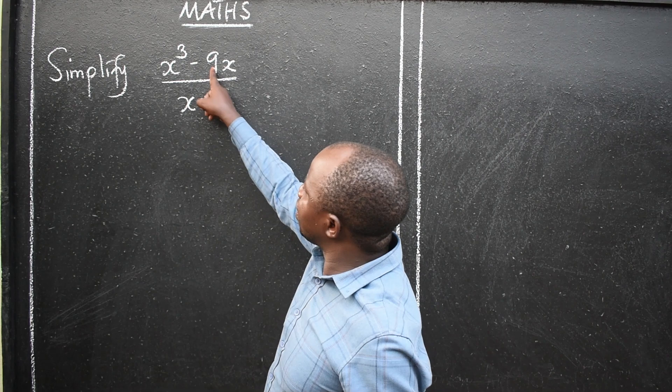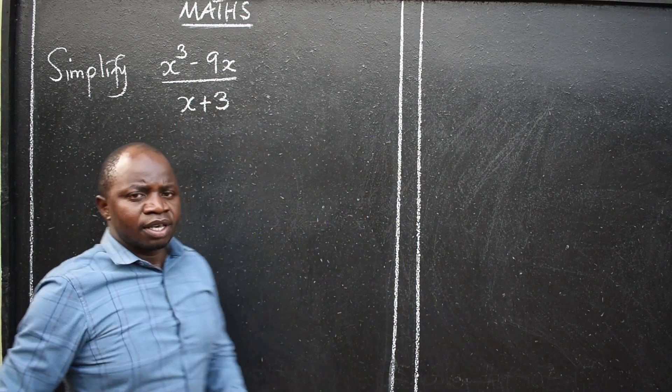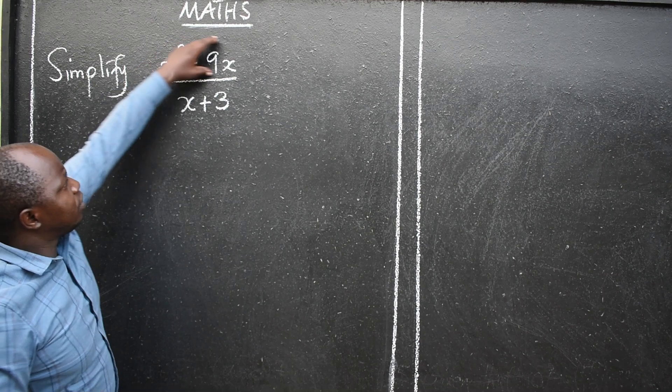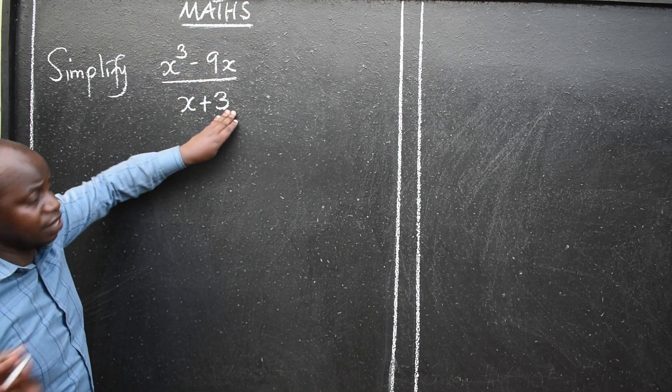So x to the power 3 minus 9x. We simplify that. What we are going to do is to factorize. So we leave the denominator the way it is.